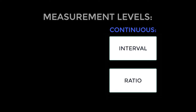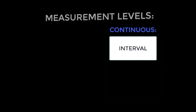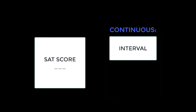Now let's explore continuous data measurement levels. We consider continuous data to be superior to categorical data because it captures more variance and has more options for analysis. The first type of continuous data is interval. Interval level data is classified as being in logical order with the presence of equal intervals, but no absolute zero. For example, SAT scores are considered interval because they are scores with equal intervals but no absolute zero — the lowest score available on the SAT is 400, not zero.